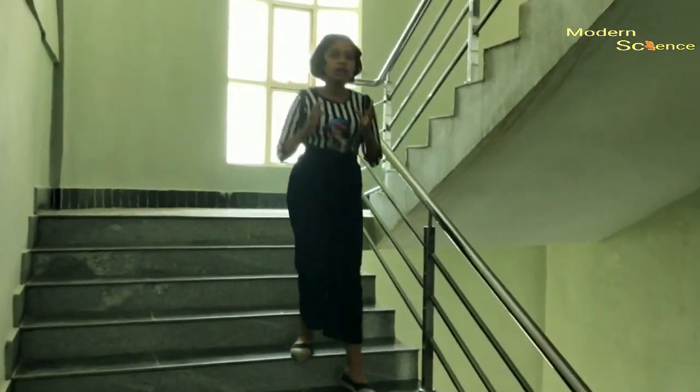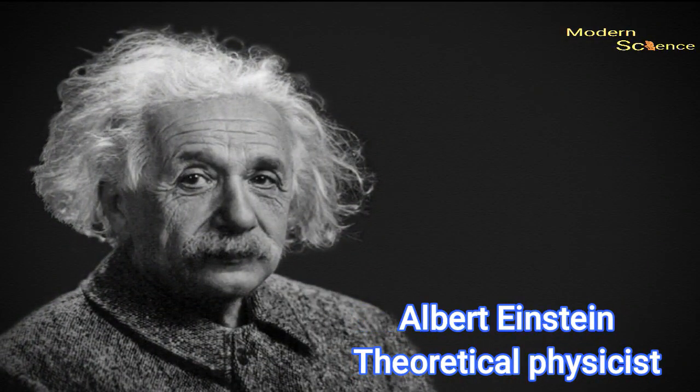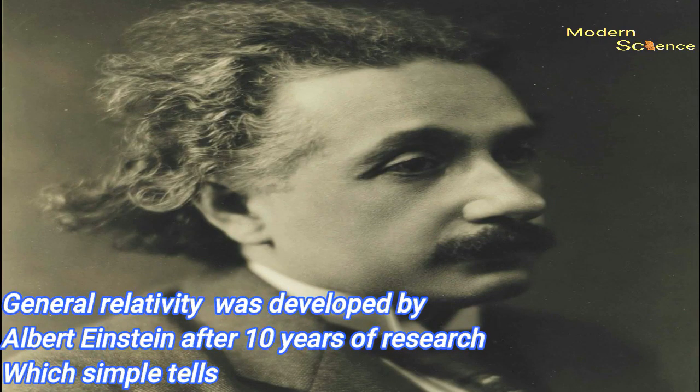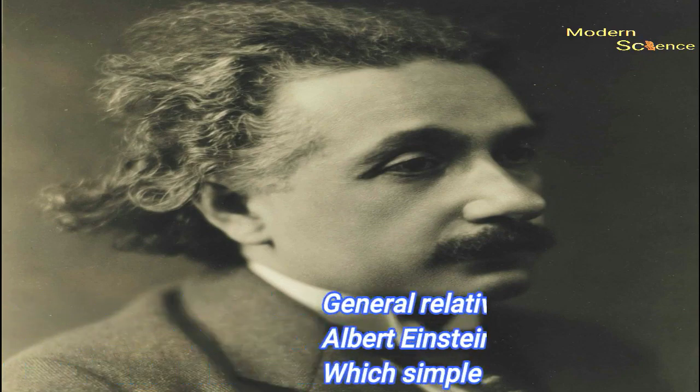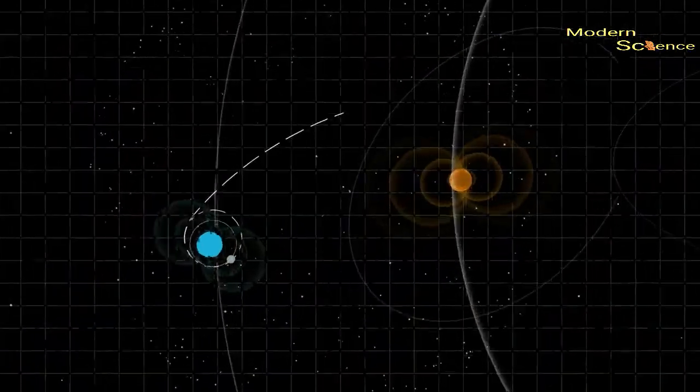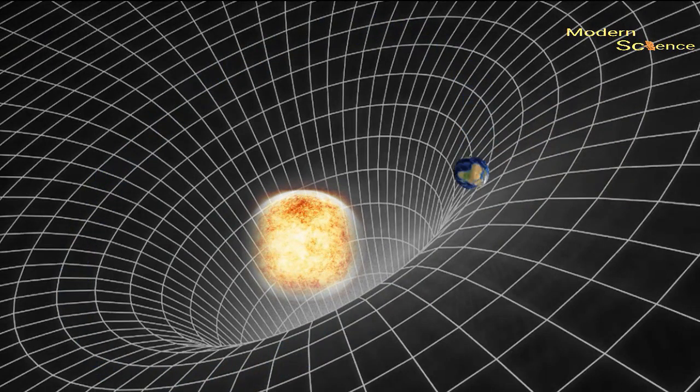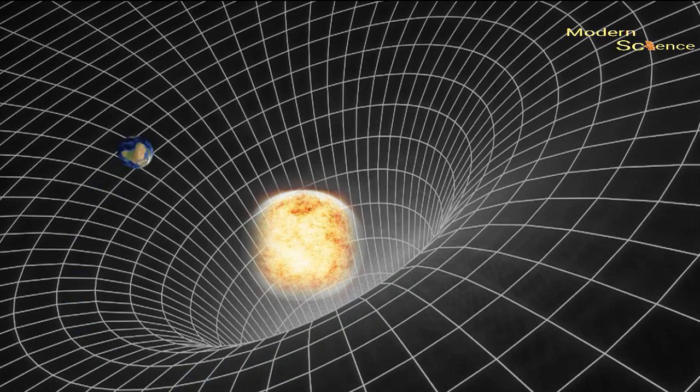If you cannot explain it simply, you don't understand it well enough. The famous quote of the most intelligent person, Einstein. General relativity was developed by Albert Einstein after 10 years of research, which simply tells gravitational attraction between masses results from the warping of space and time fabric by those masses. And this theory became the architect of our present modern classical physics. To understand it briefly and simply, let us see my video, The Theory of General Relativity.